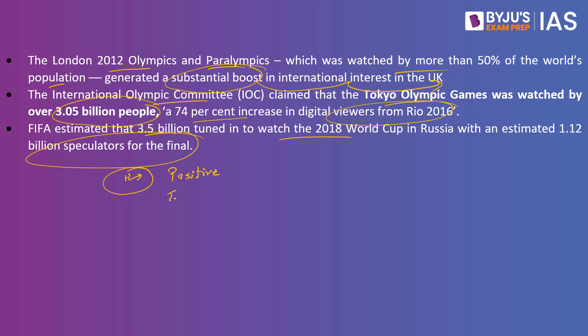Sporting events also boost tourism and generate money for the host country. We have the India-Pakistan rivalry, yet Virat Kohli is loved in Pakistan. The example of Rafael Nadal crying for Roger Federer left the internet heartbroken — showing that opposition in sports increases camaraderie and sportsmanship. Ultimately, issues between countries can also be diluted over time through sports. That is the positive outcome of sports as soft power.